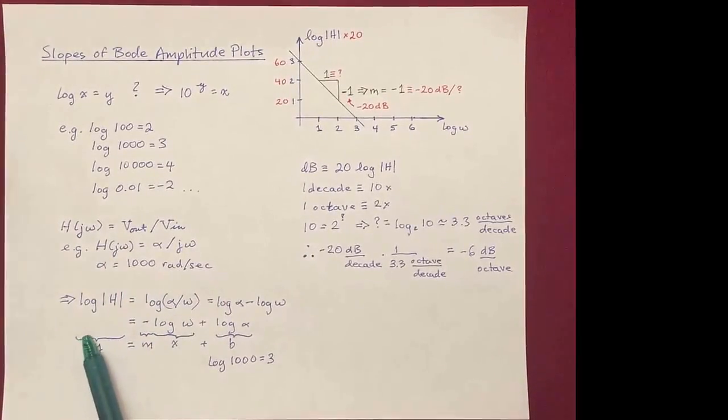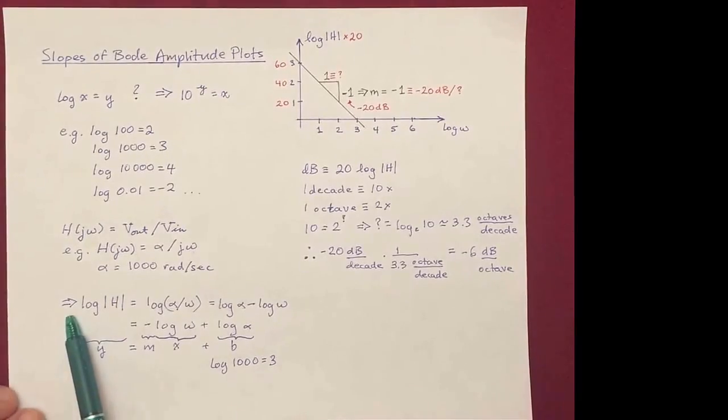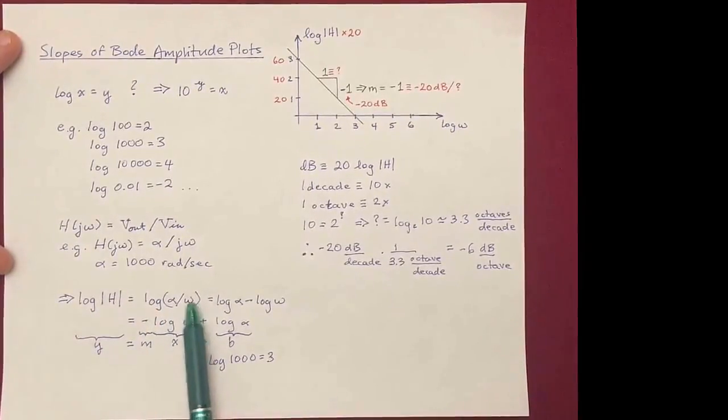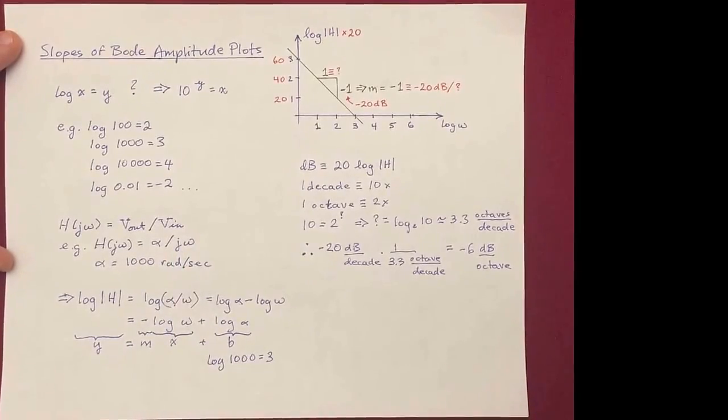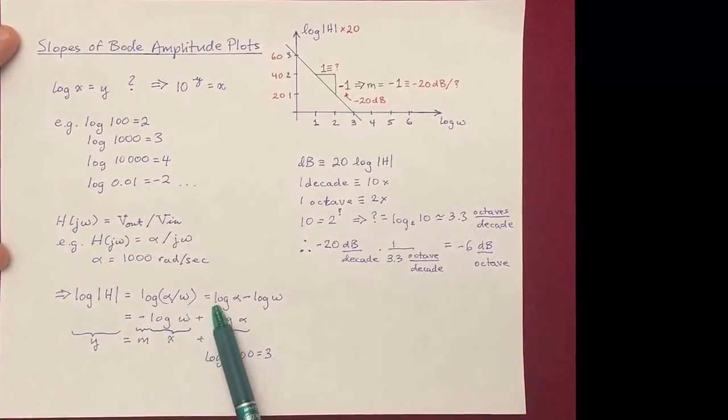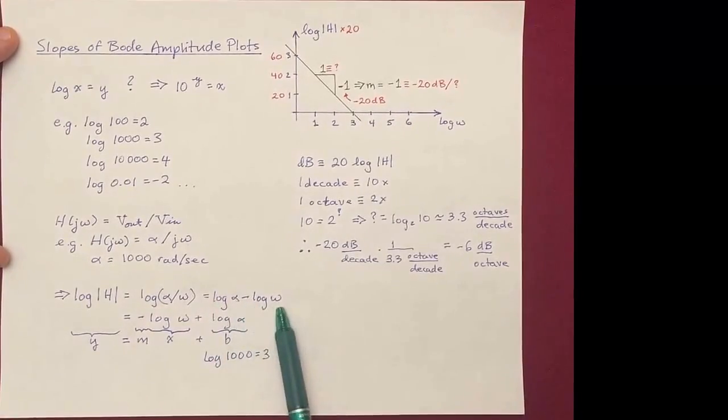And to plot this in a Bode plot, we have to take the logarithm. So the log of the magnitude of h is just the log of alpha over omega, the j disappears when you take the magnitude. And from the rule of logarithms of quotients, that's going to be log of alpha minus log omega.